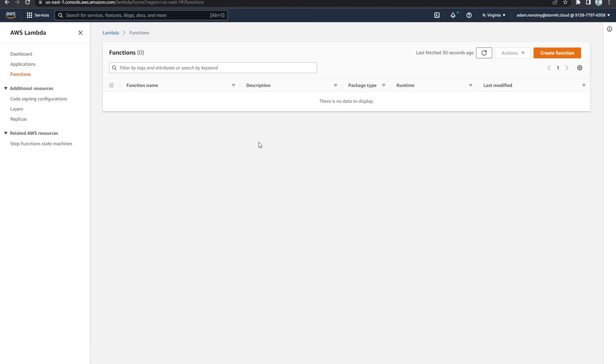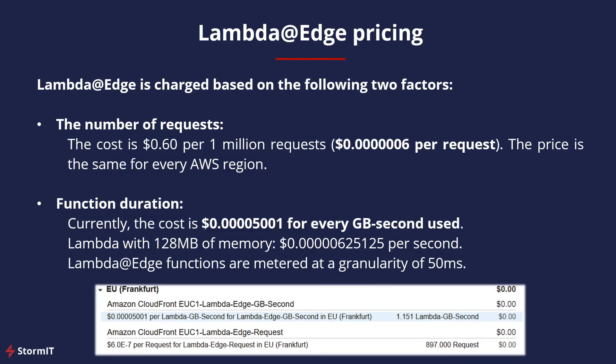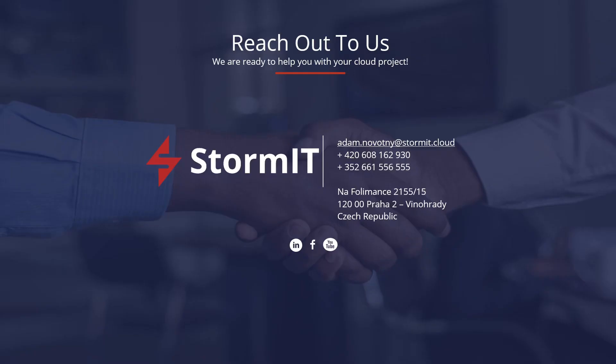The pricing for Lambda at Edge is based on the number of requests: you pay $0.60 per million requests. You also pay for function duration — for instance, if you use Lambda with 128 MB of memory, you pay $0.000001 per second, measured with a granularity of 50 milliseconds.